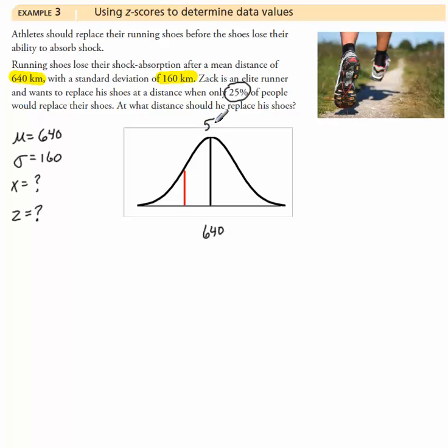So here, this would represent the 50% mark. From here to there is when most people would replace their shoes at 640 kilometers. Zach wants to replace his at the 25% mark at this point here. So we need to find this x value.